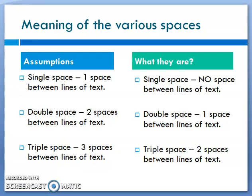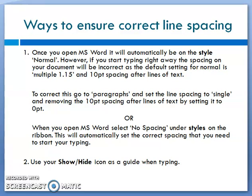The assumption of most persons is that single space means one space between lines of text, double space means two spaces, and triple space means three spaces. But that could not be further from the truth. The reality is: single space means there is no space between lines of text, double space means there is one space between lines of text, and triple space means there are two spaces between lines of text.